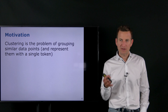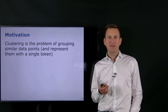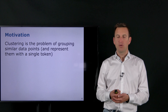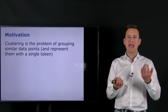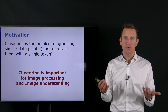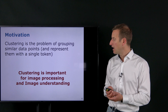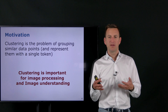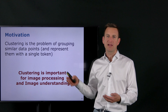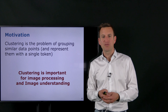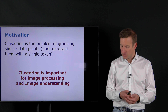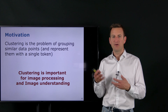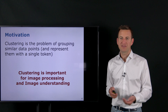Clustering is a general problem of grouping similar data points, pixels, or regions in an image and representing them with a single entity — which can be an element from those data points or an average of those data points. This is useful not only in image analysis, photogrammetry, or computer vision, but also for a large number of other tasks. We focus here on images and algorithms which work specifically well on images, rather than general clustering algorithms like K-Means.